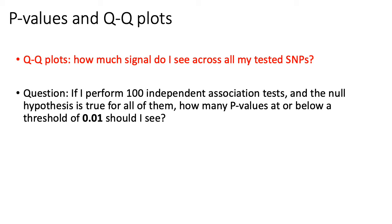Suppose we have the following scenario where we perform 100 association tests between 100 SNPs that are uncorrelated or unlinked. If there was actually no signal — if the trait we're looking at has no heritability, so genetics does not explain any of the variation in the phenotypes — then how many p-values would you expect to see that are 0.01 or smaller? Think about that, and we'll talk about it on the next few slides.